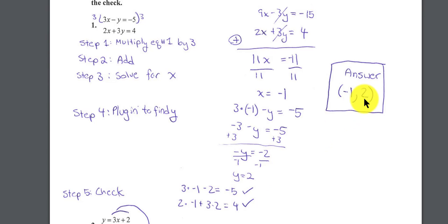Now, to check our results, if I take the negative 1 and put it in for x, and the positive 2 and put it in for y, I should get negative 5. And you'll see 3 times negative 1 minus the 2 results in negative 5. So it worked. And then if I take the negative 1 and 2, and I substitute them into this equation, we end up with 4. 2 times negative 1 plus 3 times 2 does result in 4. So the check works.